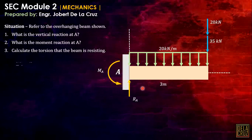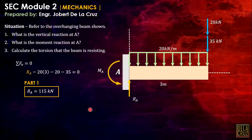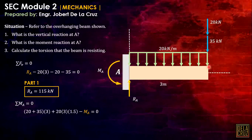Taking summation of forces vertical: RA minus 20 times 3 (the resultant of the uniformly distributed load) minus 20 minus 35 plus the reaction at A equals zero. For the moment at A, by summation of moments: 20 plus 35 times moment arm 3, plus 20 times 1.5 — the resultant acting at half of 3 meters — all clockwise rotations.